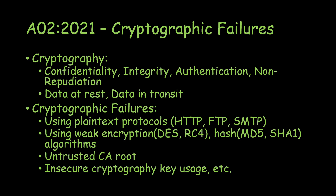There are two states of data: data at rest and data in transit. Data at rest is data residing on a server hard drive or on your personal laptops and desktops. Data in transit is data that travels from your device to a server — for example, when you send credit card information to make a payment. Cryptography ensures that data is secure both at rest and in transit.